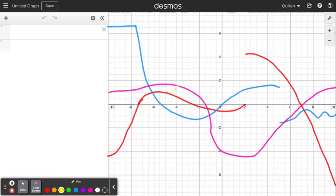Calculate, or rather estimate, the limit as x approaches negative 6 of this red graph.